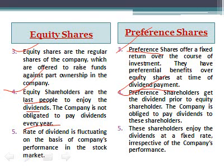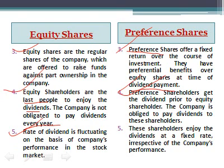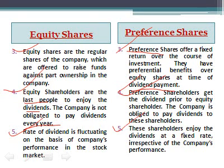Rate of dividend is fluctuating on the basis of company performance in the stock market. Company अच्छा performance नहीं कर रही है या बहुत अच्छा कर रही है — उसी को देखकर equity shareholder को dividend का rate fluctuate करता है। Company अच्छा perform करे तो rate बढ़ाकर दे, नहीं तो कम दे या बिल्कुल न दे। On the other hand, preference shareholders enjoy the dividend at a fixed rate irrespective of the company's performance — company को preference shareholder को dividend देना पड़ता है और rate of dividend भी fixed होता है।